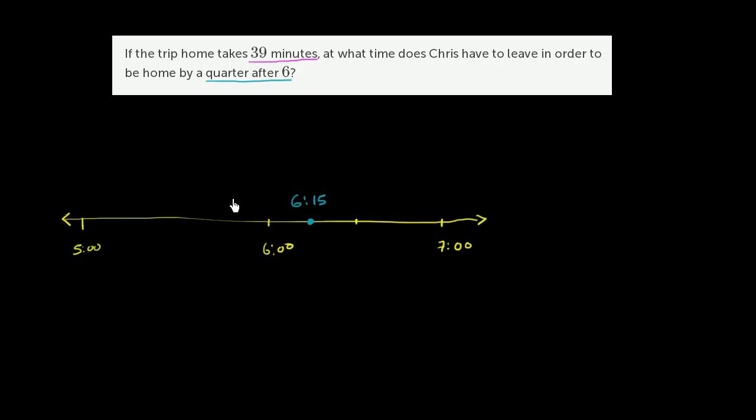They tell us that the trip home takes 39 minutes. So he would have had to have left 39 minutes before this in order to get home at 6:15. So let's go 39 minutes before this to figure out the time that he would have to leave in order to be home by 6:15.